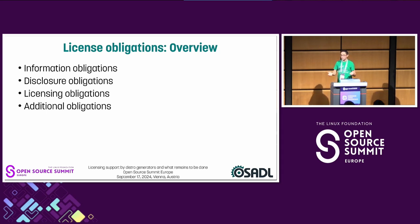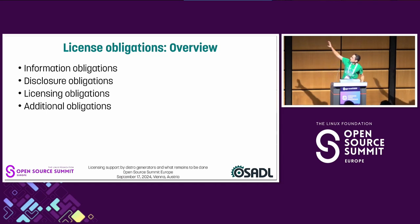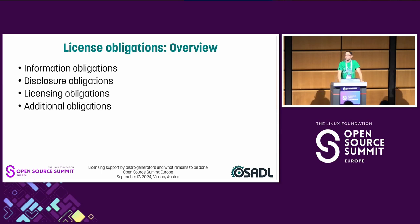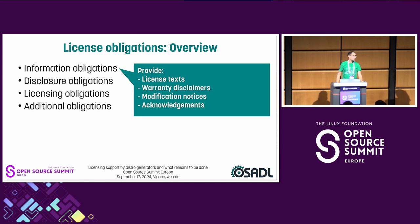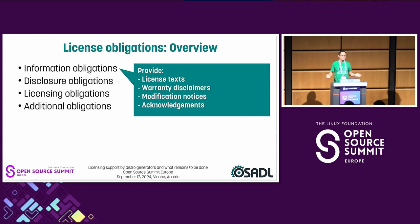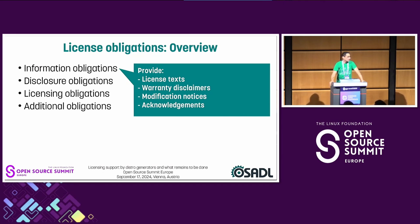We're all using open source. The great thing about open source is if you just use it, there's not much you really need to do. The fun starts when you start redistributing it — then there are obligations to fulfill. I summarized these into four categories. First, information obligations: the bare minimum every open source license requires is forwarding license texts, informing the recipient what they're allowed to do and what they need to do when redistributing, including warranty disclaimers, modification notices, and acknowledgements.